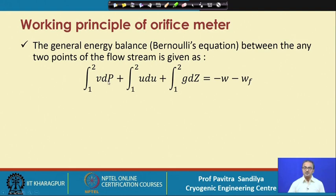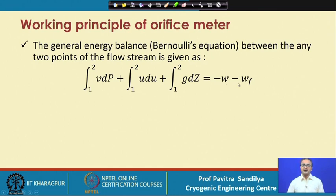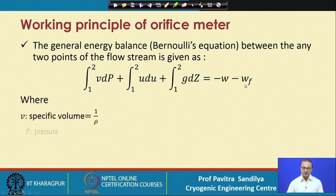We use Bernoulli's equation between points 1 and 2. In Bernoulli's equation we have three terms: pressure energy, potential energy, and kinetic energy. The first term represents pressure energy, the second kinetic energy, and the third potential energy. In this modified engineering Bernoulli's equation we include two more terms on the right-hand side — WF shows the work done due to friction — where we assume or neglect all frictional losses and other works.